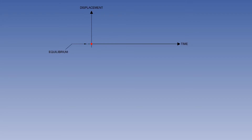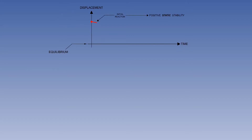We will first consider a type of dynamic stability called subsidence. The vertical axis is displacement from equilibrium, and the horizontal axis is time. The red dot represents an aeroplane in equilibrium. The red dot is displaced from equilibrium, and when the disturbing force is removed, the initial reaction is to start to move back towards equilibrium. This illustrates positive static stability. Over a period of time, the dot returns to equilibrium, illustrating positive dynamic stability.